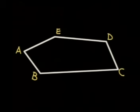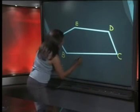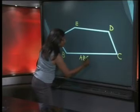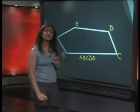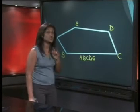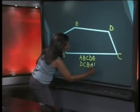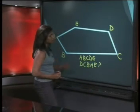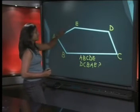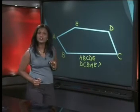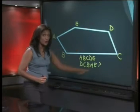Look at the labelled polygon. I can name it A, B, C, D, E. Now, can I name it in any other way? What about D, C, B, A, E? Let's have a look — D, C, B, A, E. Yes, that also works. You are still using a label that names vertices in order.